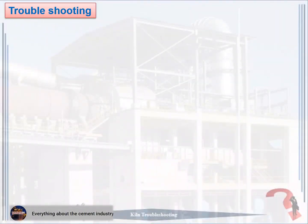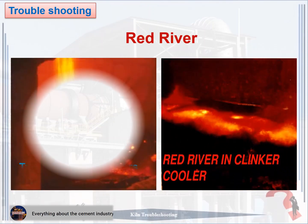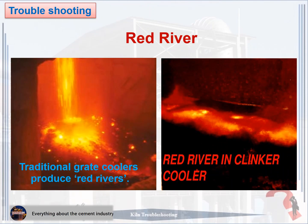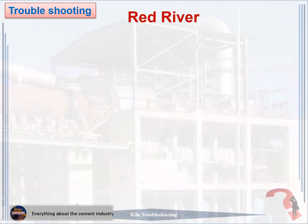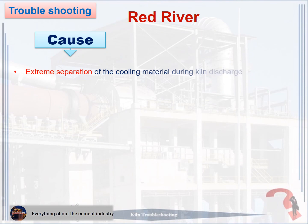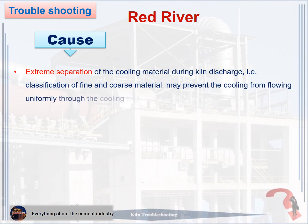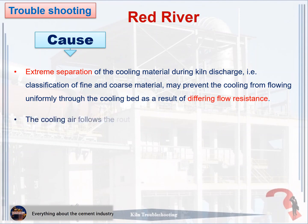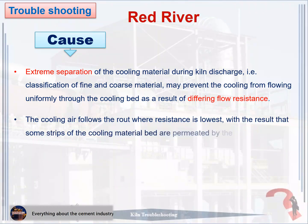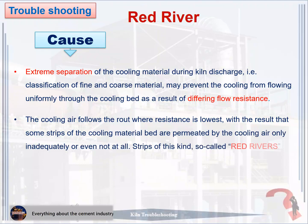Problem 2: Red River. The cause of red river: one, extreme separation of the cooling material during kiln discharge — classification of fine and coarse material may prevent the cooling from flowing uniformly through the cooling bed as a result of differing flow resistance. Two, the cooling air follows the route where resistance is lowest, with the result that some strips of the cooling material bed are permeated by the cooling air only inadequately or not at all. Strips of this kind, so-called red rivers, generally occur unilaterally along the edge of the grate.